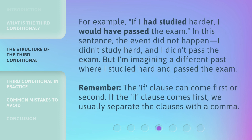For example: 'If I had studied harder, I would have passed the exam.' In this sentence, the event did not happen — I didn't study hard, and I didn't pass the exam. But I'm imagining a different past where I studied hard and passed the exam.